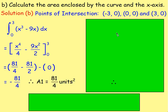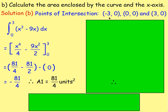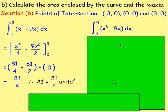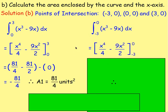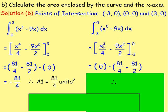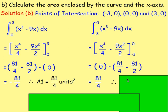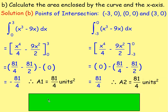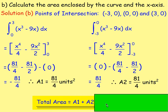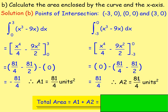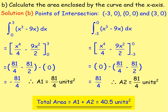Do the exact same thing for the other area — integrate between 0 and negative 3. Same integration gives x to the power of 4 over 4, minus 9x squared over 2. Sub in 0, you get 0. Sub in negative 3, you get 81 over 4 minus 81 over 2, giving 81 over 4. So the area of the second part is 81 over 4. Add them together: the total area is area 1 plus area 2, so 81 over 4 plus 81 over 4, which is 162 over 4. Simplify and you end up with 40 and a half, or 40.5 squared units.